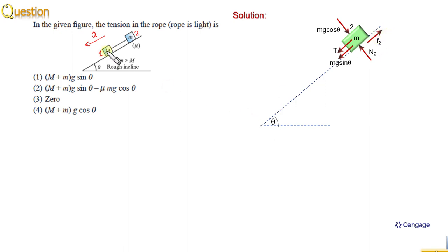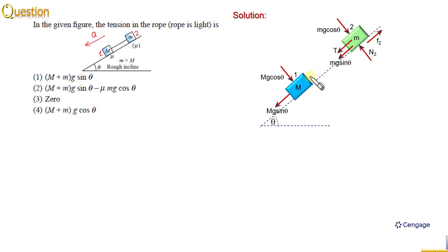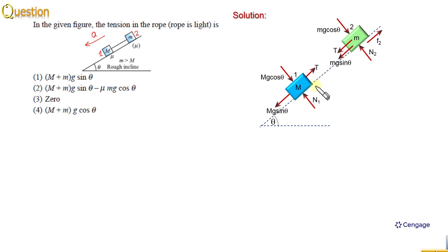Now we can consider block number one. Similarly, we can make the component of the weight parallel to the incline and perpendicular to the incline. These components, the normal reaction, and the tension force will be in the upward direction. This is again sliding down, so the friction force will be in the upward direction and kinetic in nature.